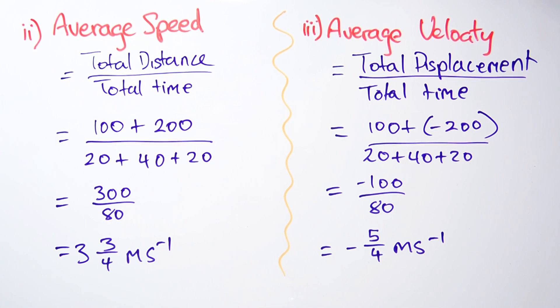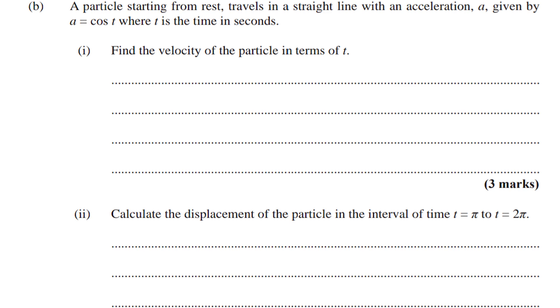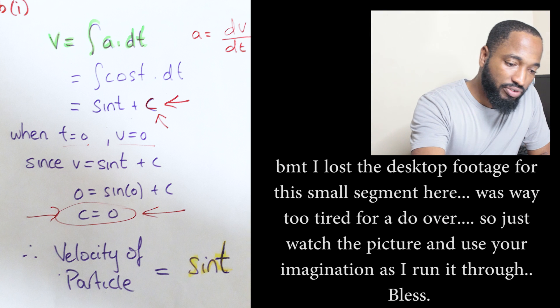Part b: A particle starting from rest travels in a straight line with an acceleration a given by a equals cos t, where t is the time in seconds. Find the velocity of the particle in terms of t. We're given a equals cos t. We're asked to find velocity but given this function of acceleration.